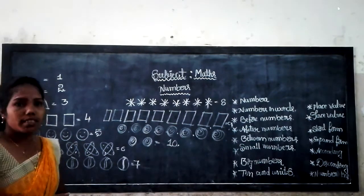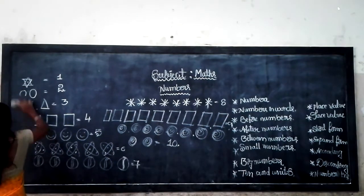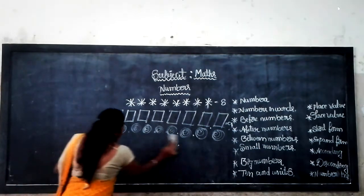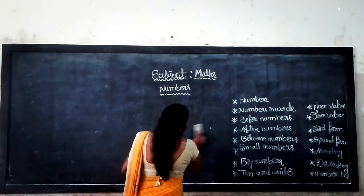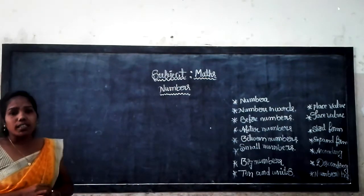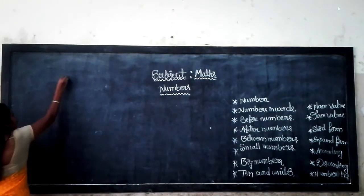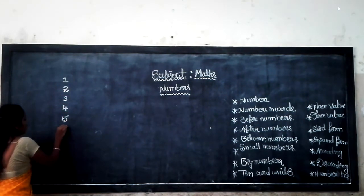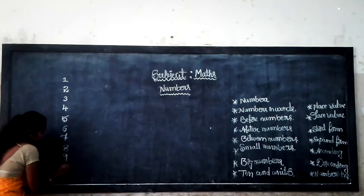Single-digit numbers and double-digit numbers. Let us count: 1, 2, 3, 4, 5, 6, 7, 8, 9, 10.